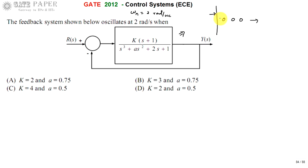When in the Routh array we get a row of all zeros, we can say the system is oscillating at some frequency. That frequency can be calculated using the auxiliary equation, which is formed from the row just above the all-zeros row. We use the coefficients of that row to write the auxiliary equation and solve it to get the value of omega_n.